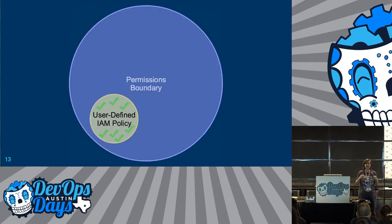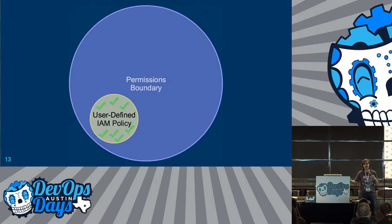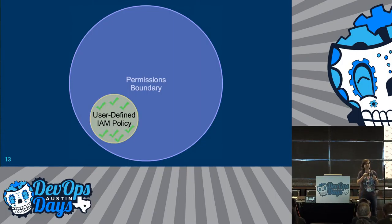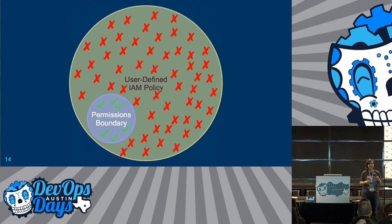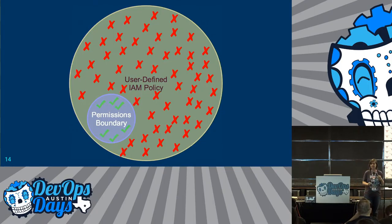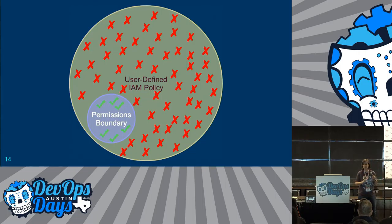Permissions boundaries allow you to delegate a maximum set of permissions to someone. So I can say, hey Jesse, here's your permissions boundary — that's the max you can create or use for any IAM roles. They'll create a policy inside that and everything is totally fine. If they try to give something admin access and they're using that permissions boundary, most of the access just won't work for them. But the part that they should have access to — that'll work totally fine.